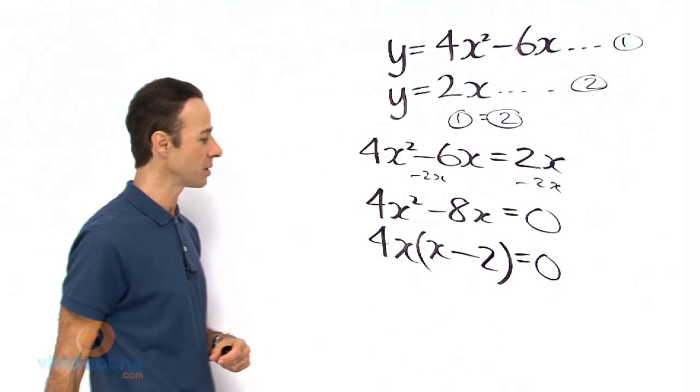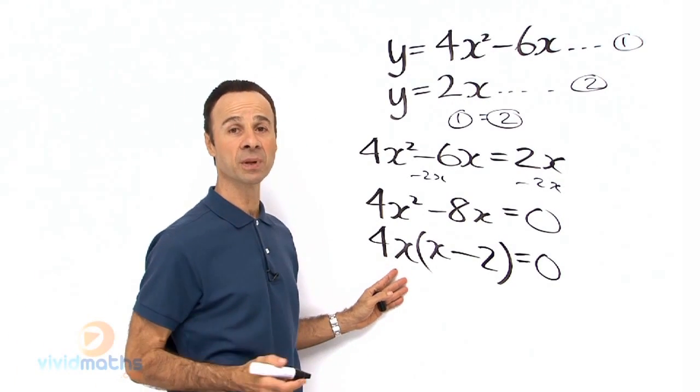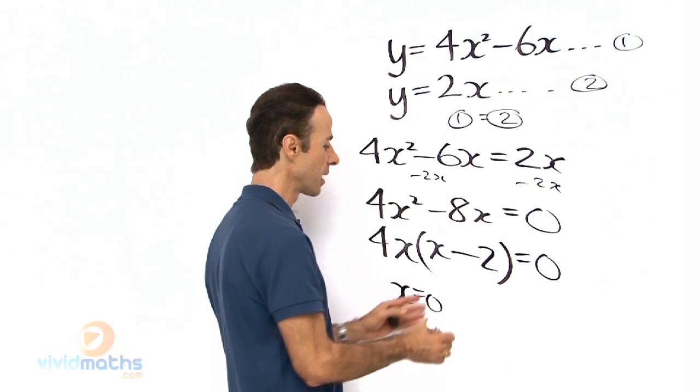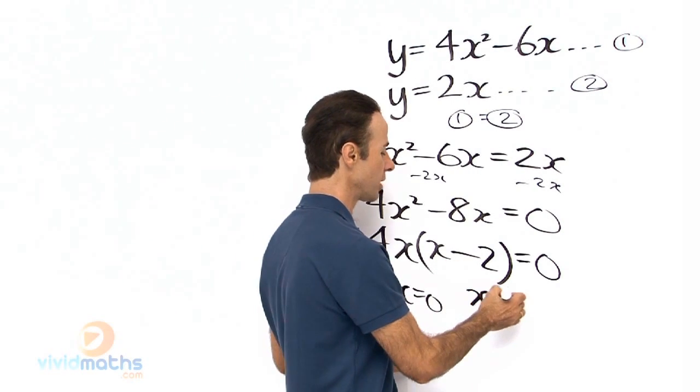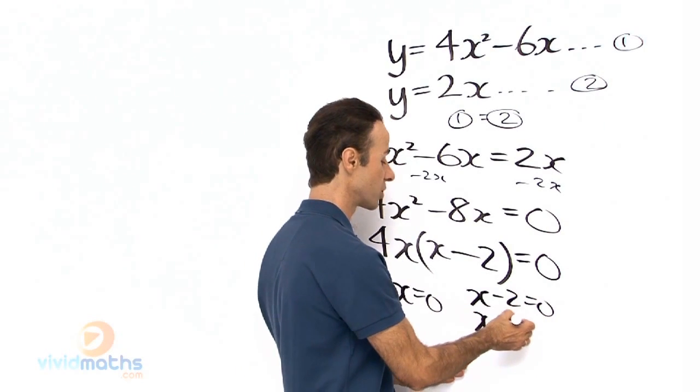So we are going to get two possibilities here. 4x equals 0, when 4x equals 0 that simply means x equals 0. So bring that down, x equals 0. And here we have x minus 2 equals 0, which means x equals 2.